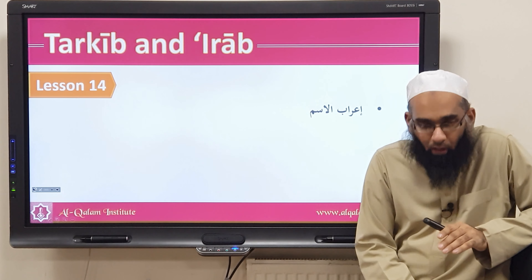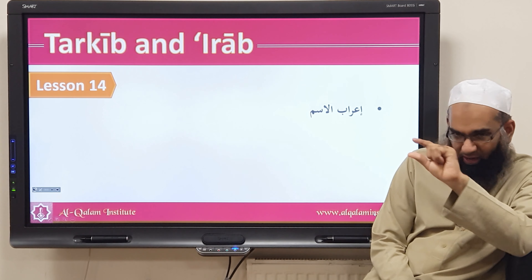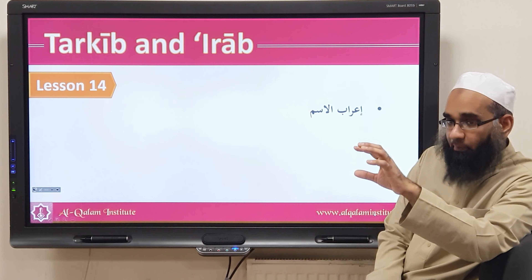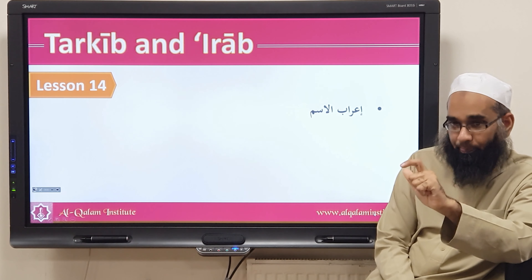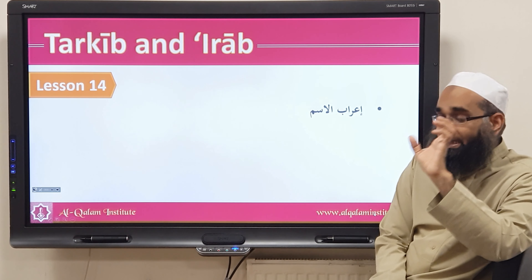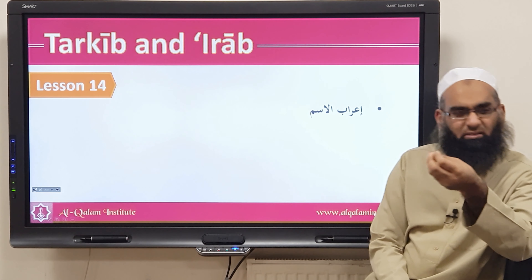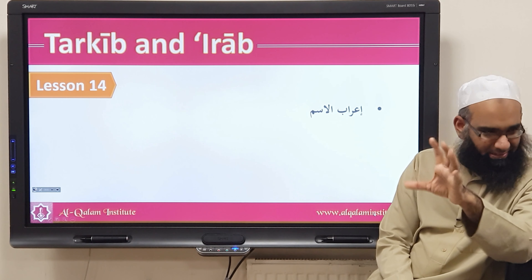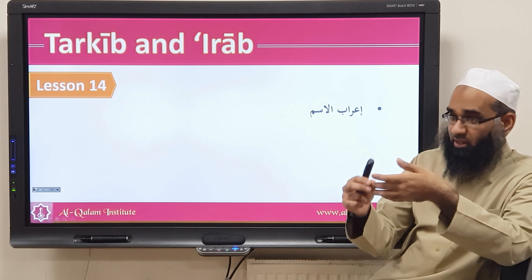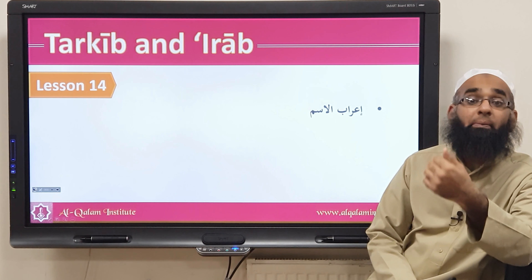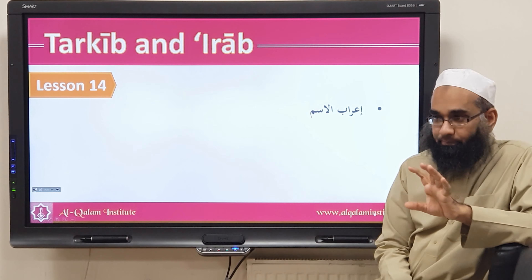Bismillahirrahmanirrahim. We focus on the basics of jumlah ismiya and jumlah fa'liya, going into slight detail about the fi'l. Now we want to go into detail of the ism, because all the examples we had done were simple. What if we have muqassar, munsarif, jama', muthanna — what is the i'rab of those? We want to understand the i'rab of an ism.